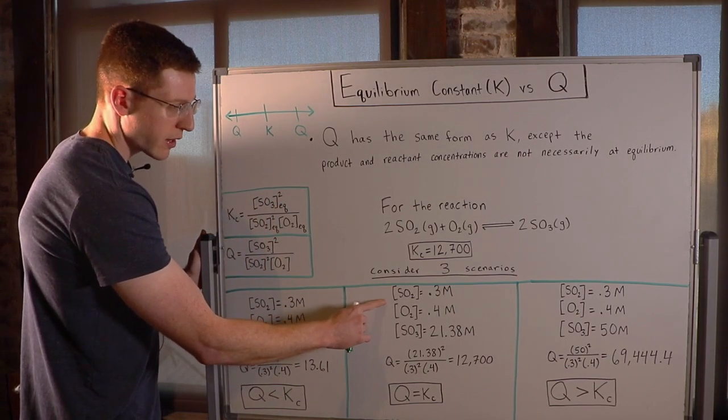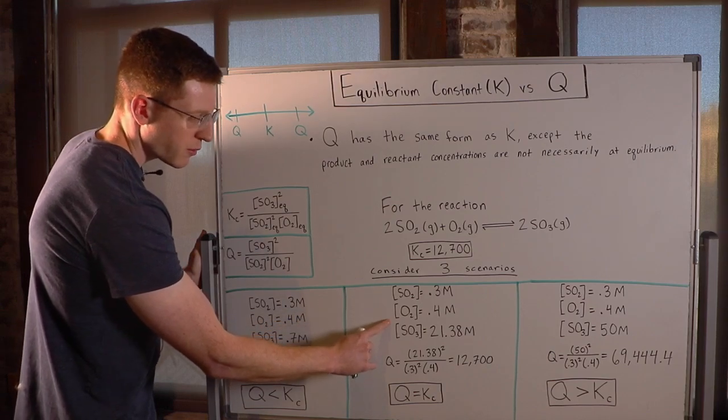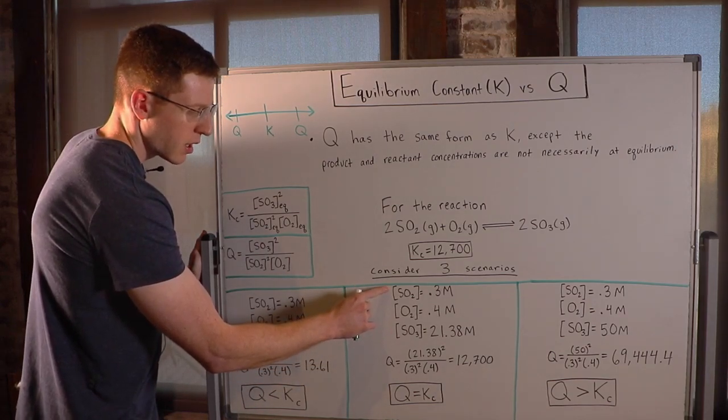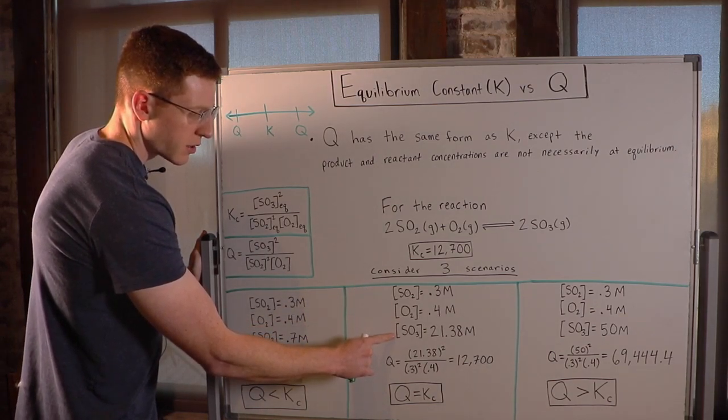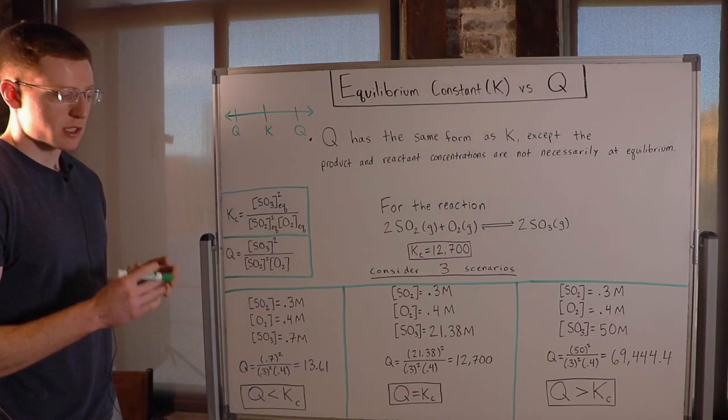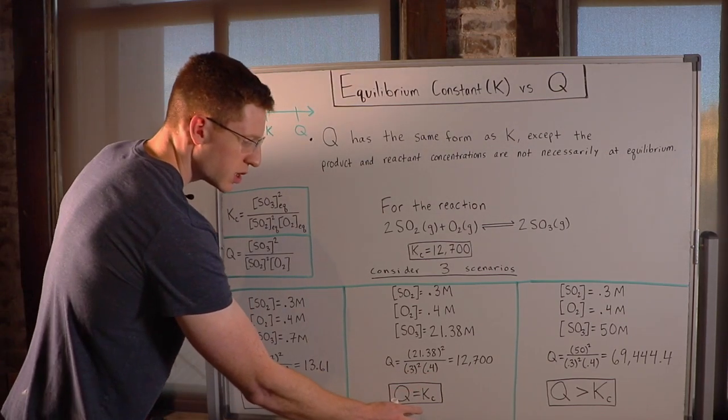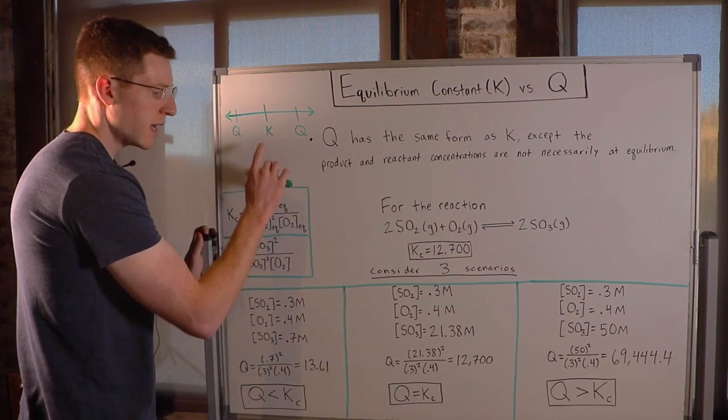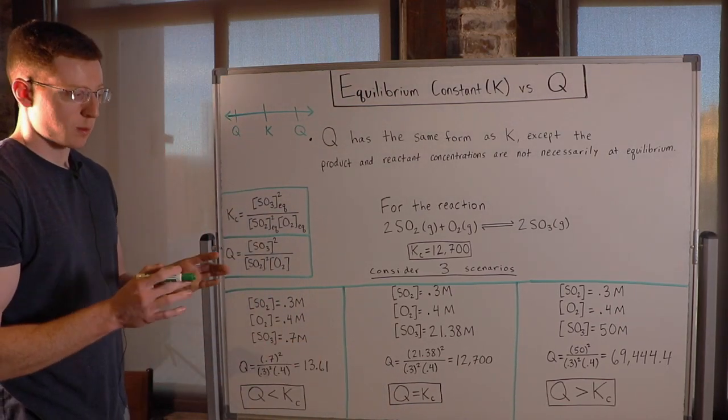So in scenario two here, I have some different initial concentrations of our species. And you can see that when I calculate Q, it comes out to be exactly 12,700. In this case, Q is exactly Kc. And in this case, this reaction is at equilibrium.